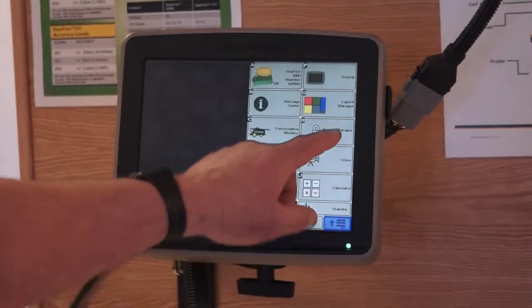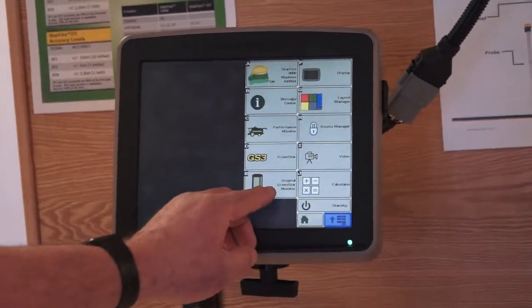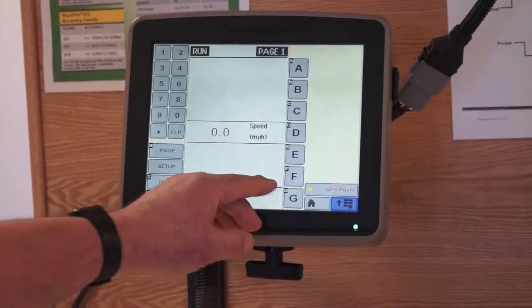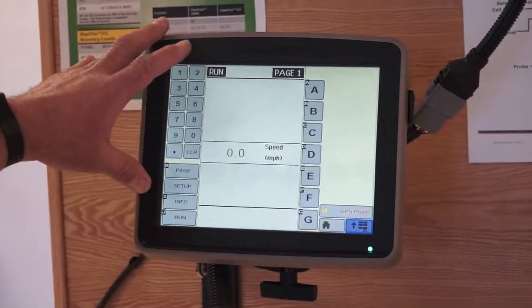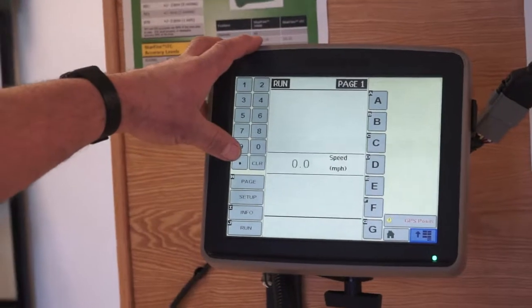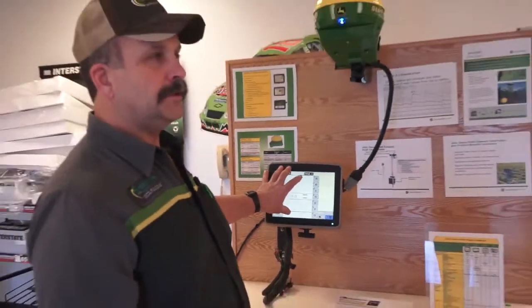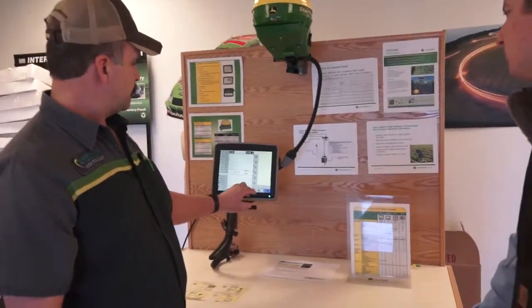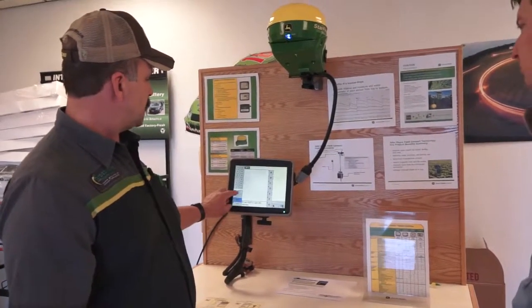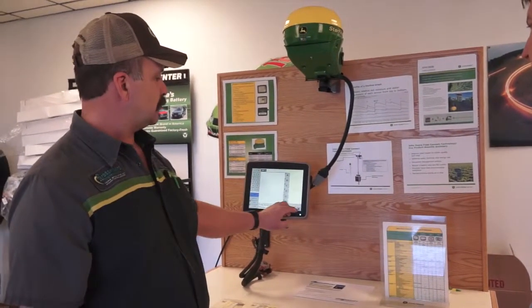Back to the menu page again, we've covered all of those. If I'm pulling an implement that requires operation on an original GreenStar monitor, which is our display from several years ago, I can still run that display on this in emulation mode with full functionality just like it was an original brown display.